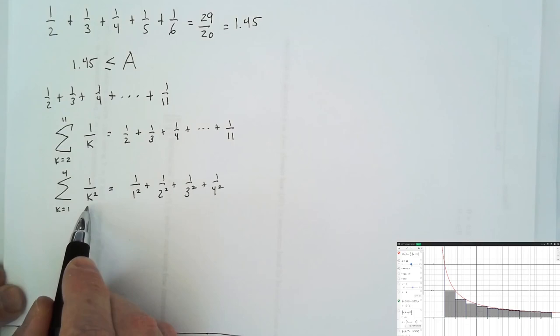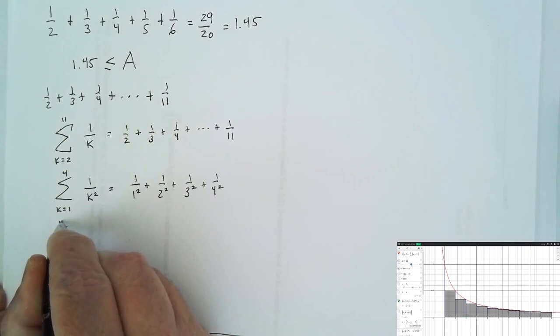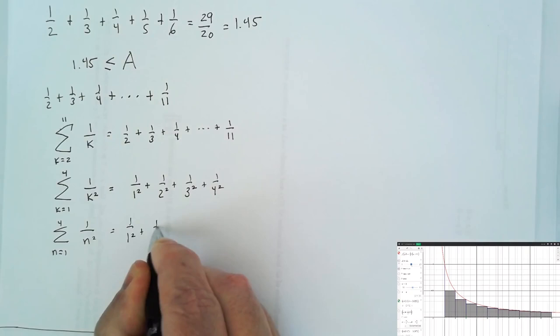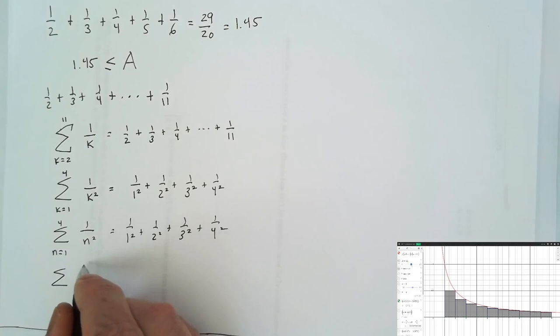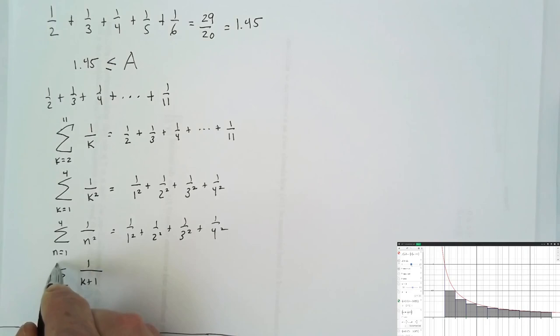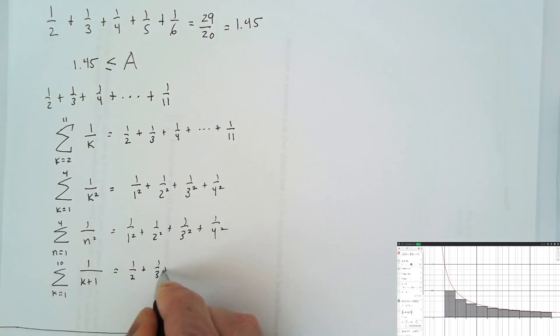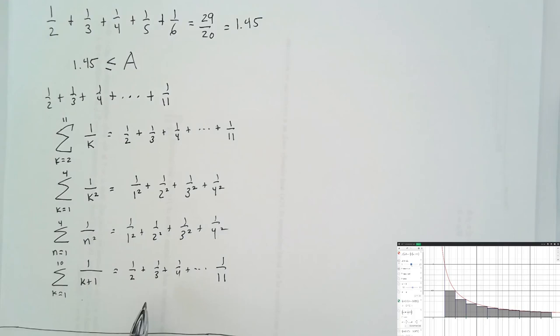We call k the index for this sum, and it doesn't have to be k — we could write the sum from n equals 1 to 4 of 1 over n squared and get the same result. We could also write the same sum differently: the sum of 1 over k plus 1 from k equals 1 to 10. Plugging in 1 gives 1 over 2, then 1 over 3, up to 1 over 11 when we plug in 10. This is the same sum written in a different way.